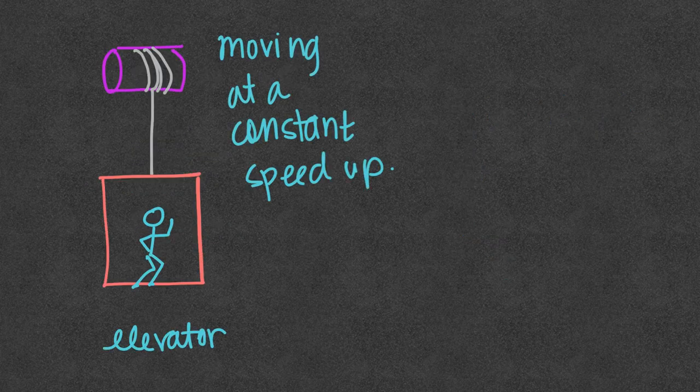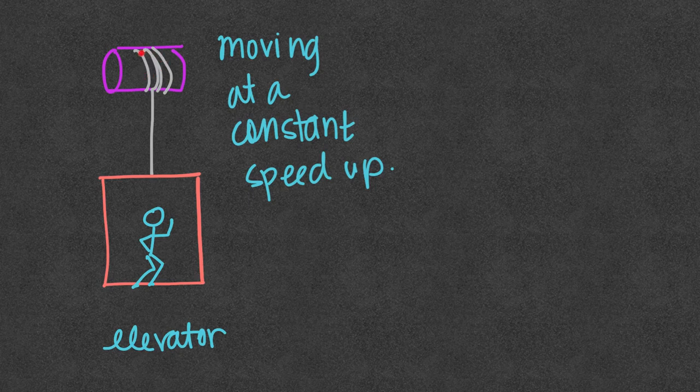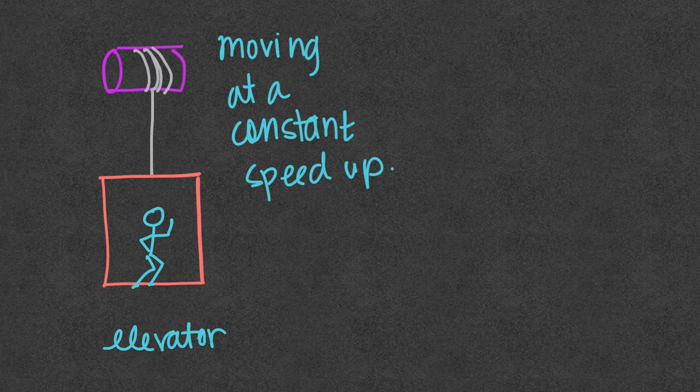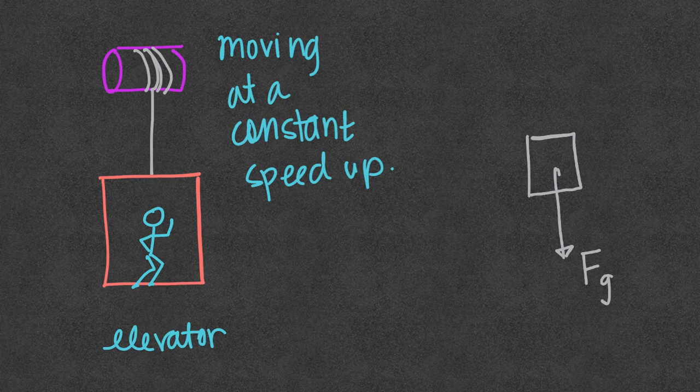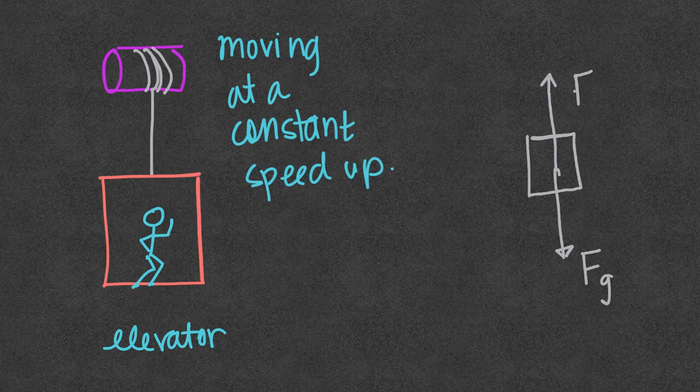In this case we have an elevator that is being raised by this crank motor system up here at a constant speed upwards. So the forces acting on the elevator would be the earth pulling on the elevator straight down and the cable holding it up causing a tension force.